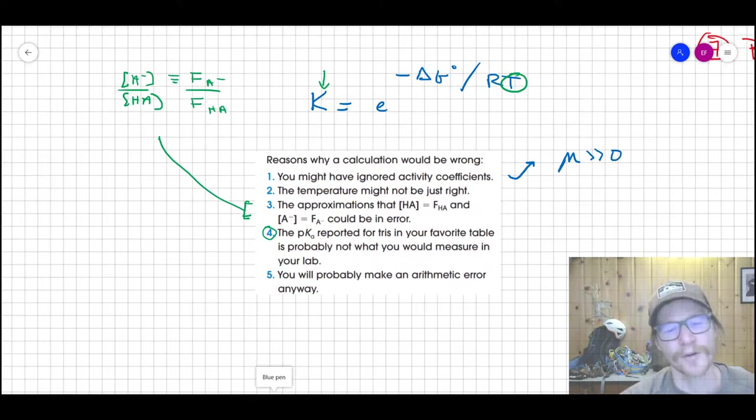As A- reacts with water to go back towards HA and HA does the same thing with water to go back towards A-. Number four is a funny one. The pKa reported for Tris in your favorite table is probably not what you would measure in your lab. And that's because, as I mentioned, measuring Ks for things, especially large, very large or very small Ks, is trouble. It's problematic. It's difficult to do. And so there's a range of values out there.